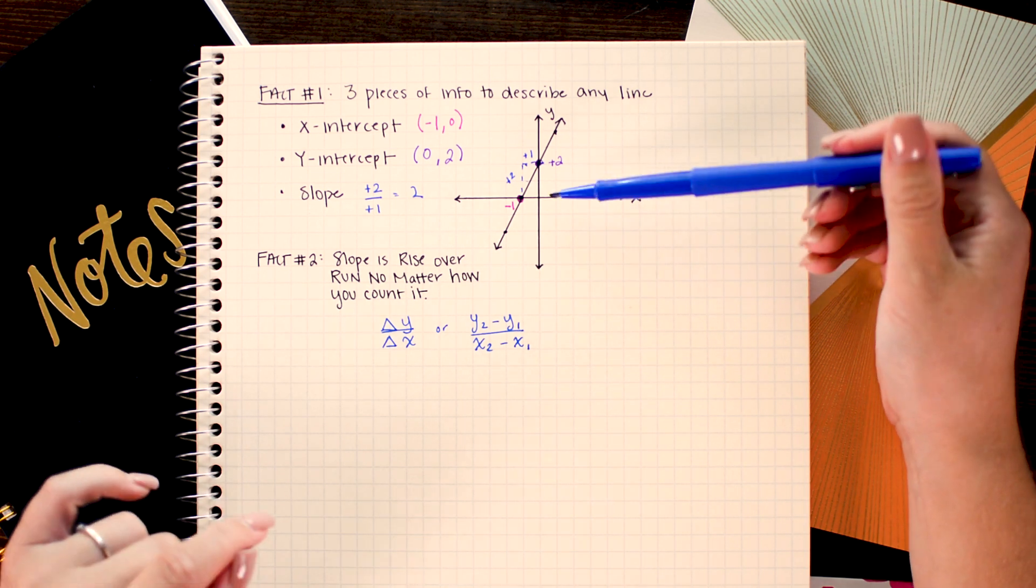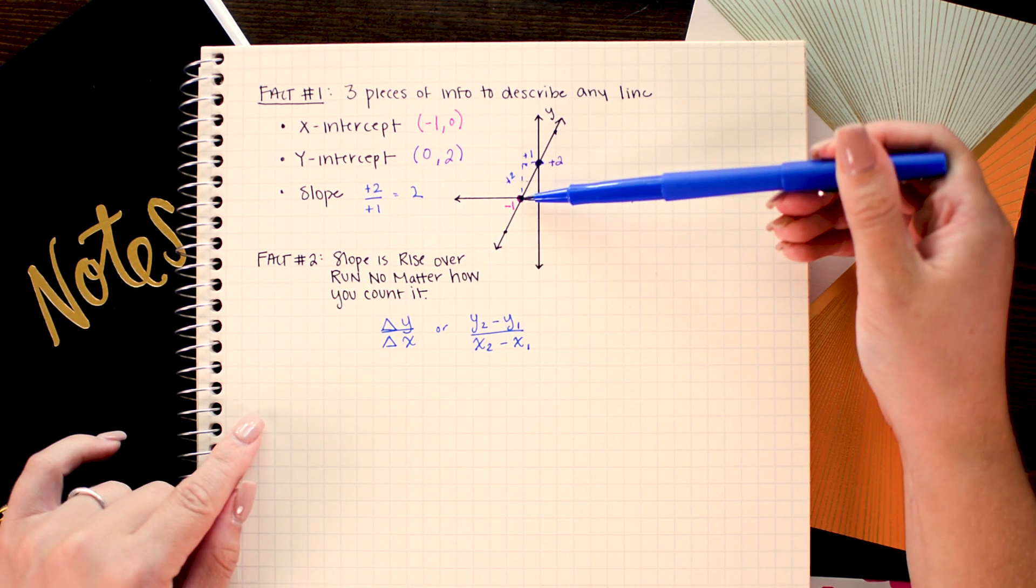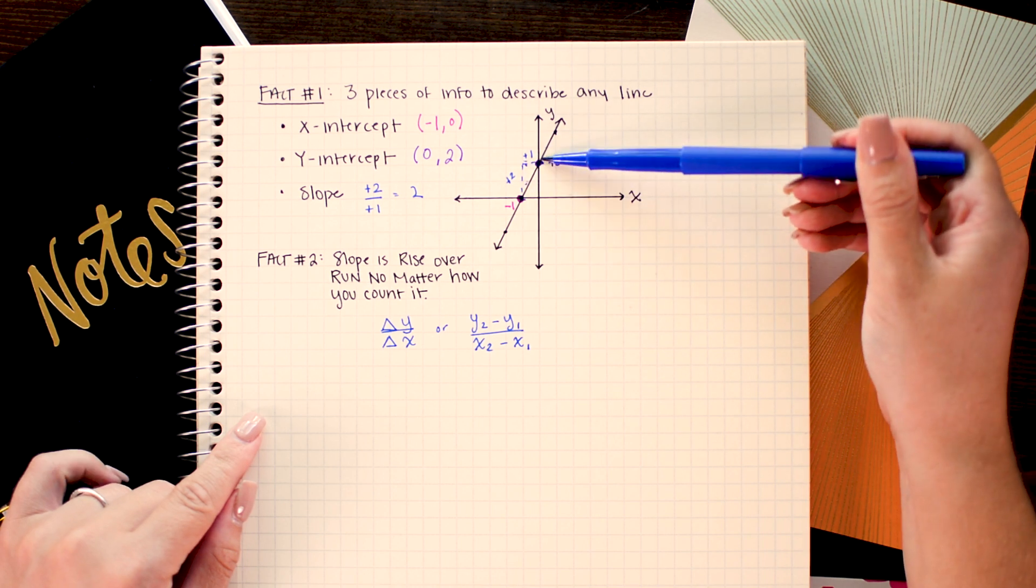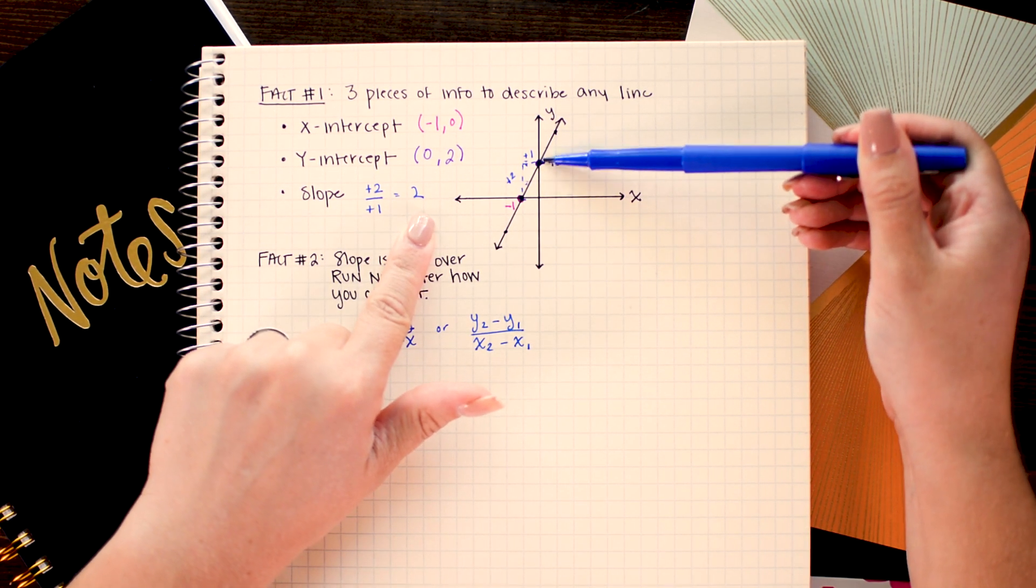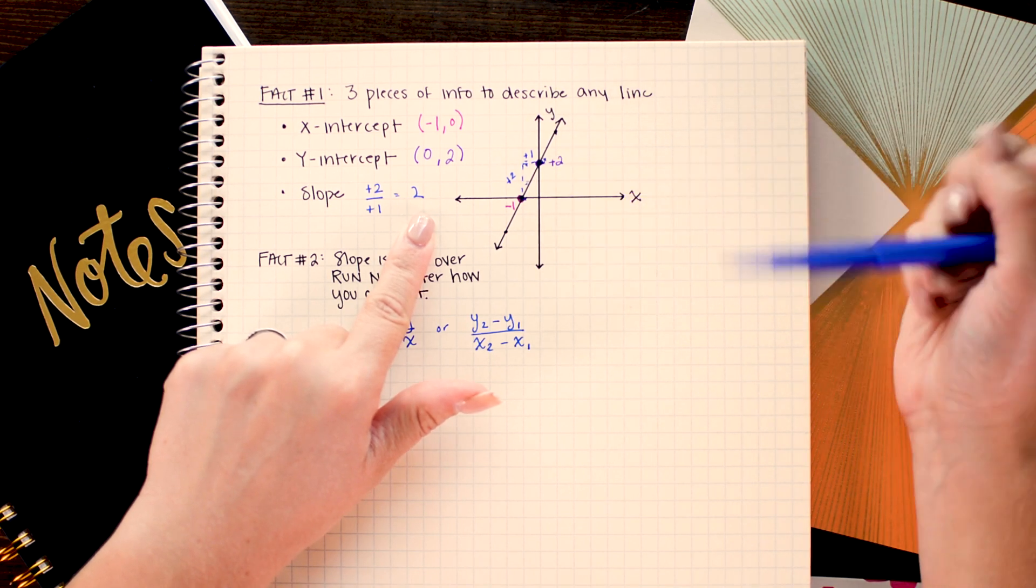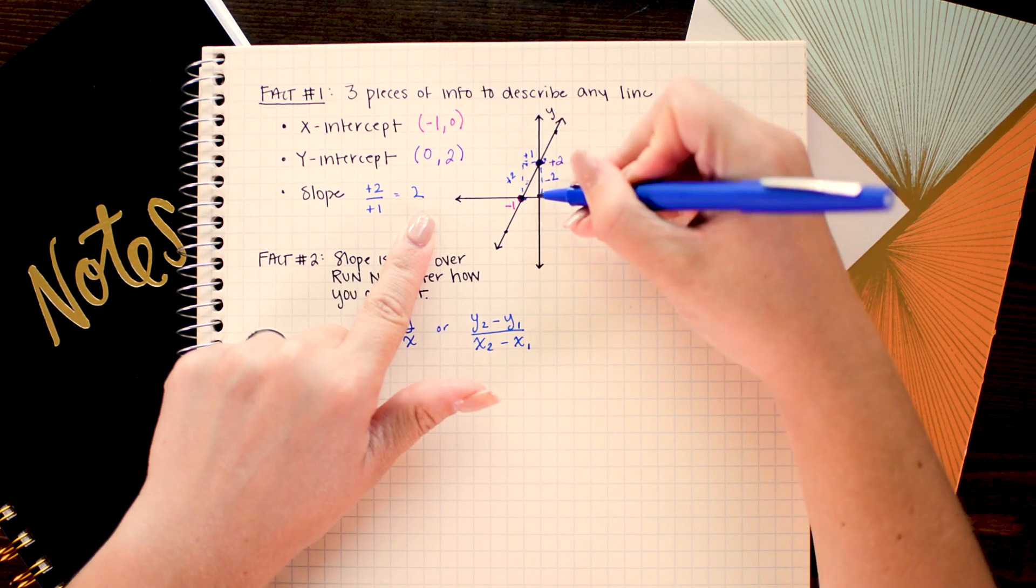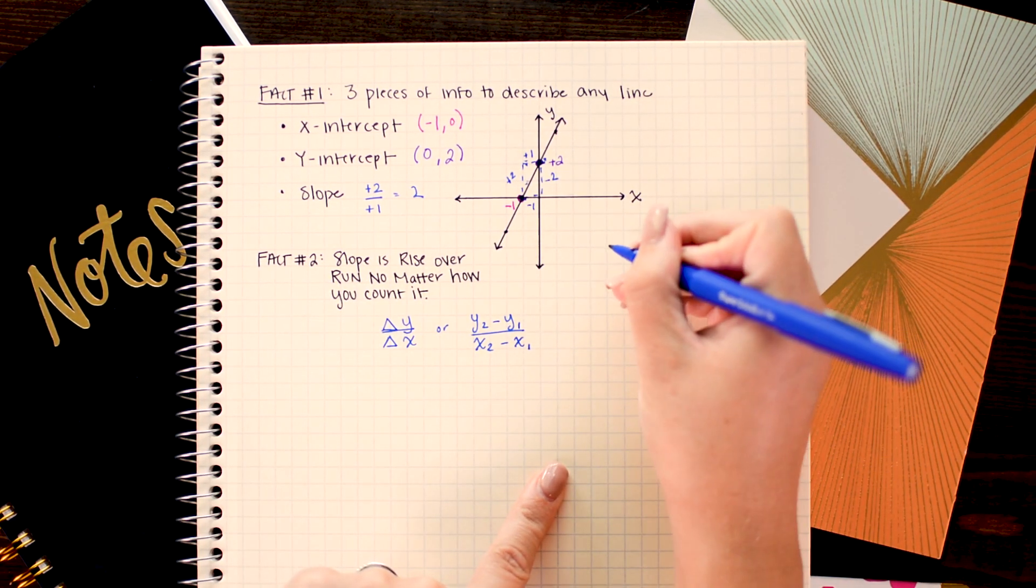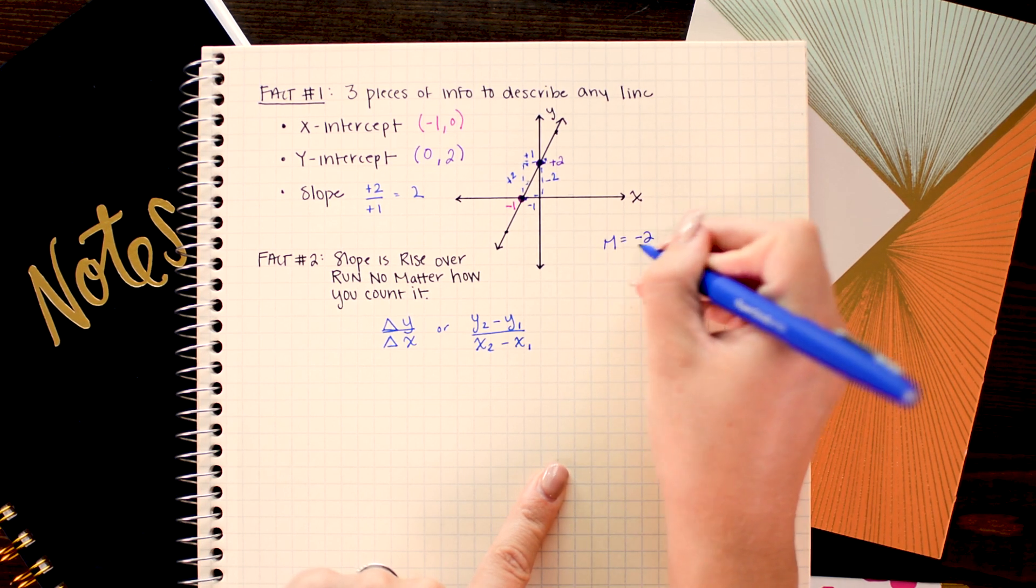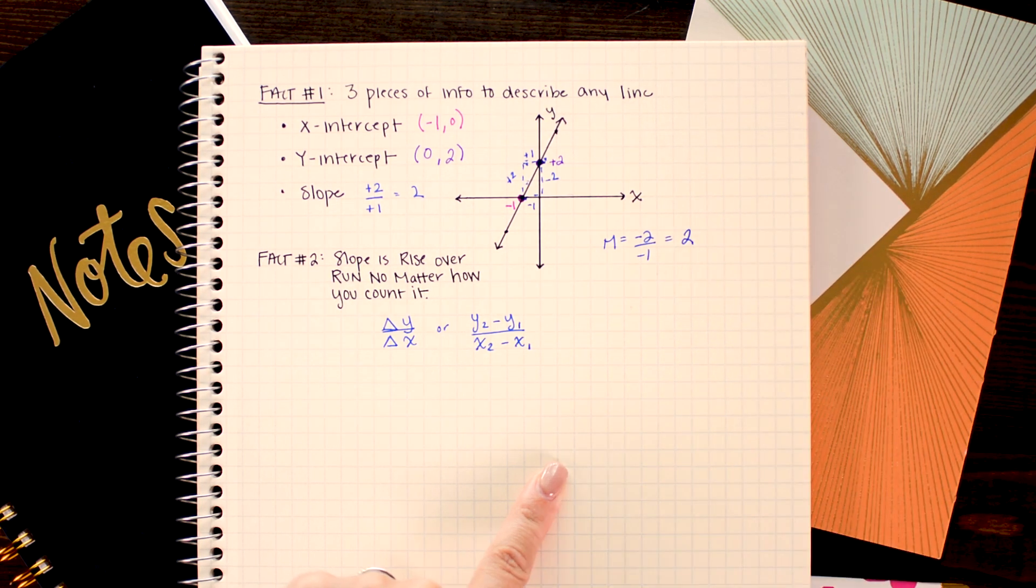So looking back at this first example we found to go from this point to this point that we went up 2 and over 1. That's how we got a slope of 2. We could also have counted from this point to this point. We would have gone down 2 and left 1. So that would be negative 2 over negative 1 which divides to positive 2 as well.